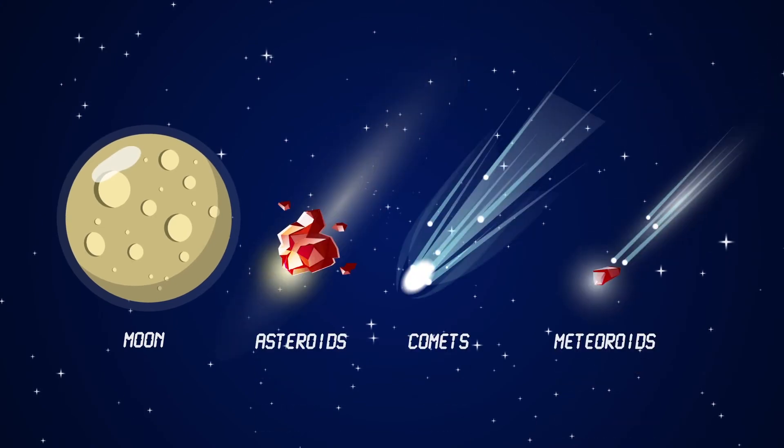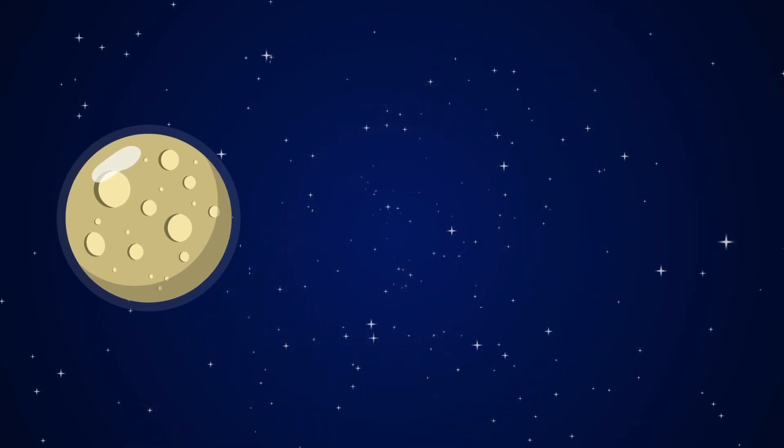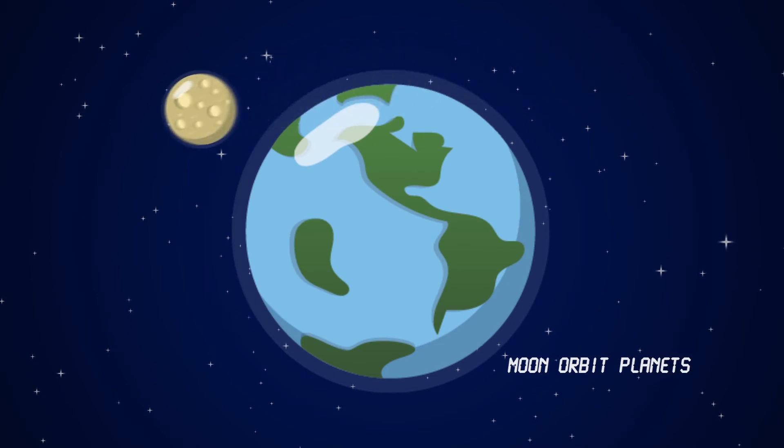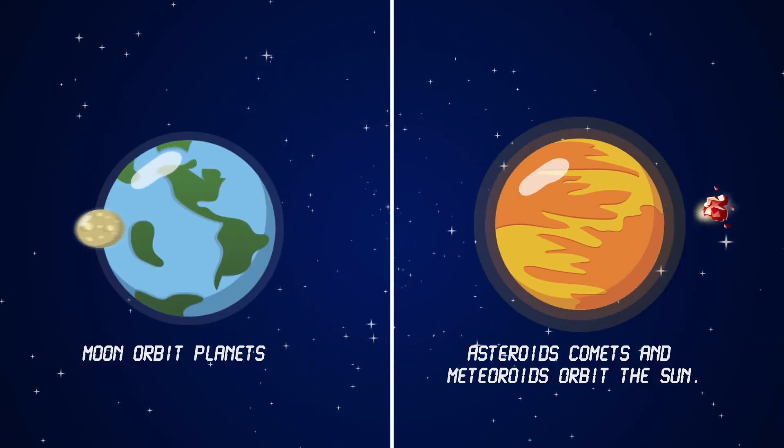Moons, asteroids, comets, and meteoroids are also part of our solar system. Moons orbit planets. Asteroids, comets, and meteoroids orbit the Sun.